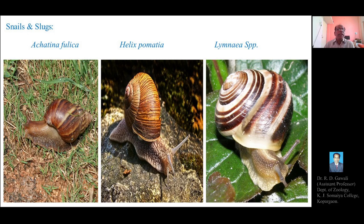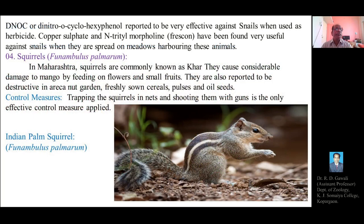Diagrams show the three important snail and slug species: Achatina fulica, the African giant snail; Helix pomatia, a terrestrial land snail; and Limnea species. These are important pests of various crops in Maharashtra, causing considerable loss or damage.